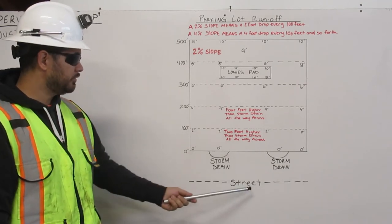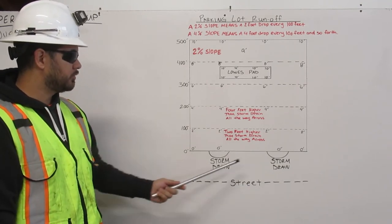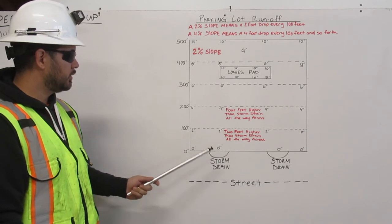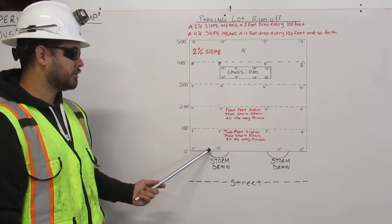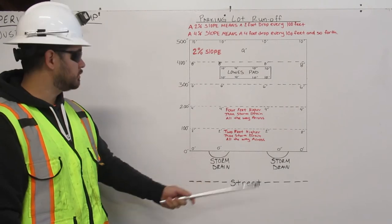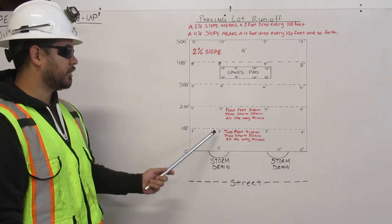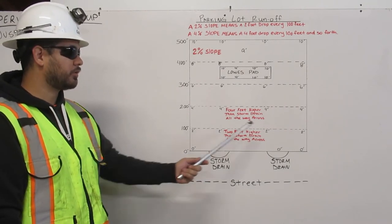Here, we have our street. We have 2 storm drains. And then at 0 feet, we're going to make it level to the storm drains. At 100 feet, we're going to make it 2 feet higher than the storm drains all the way across.